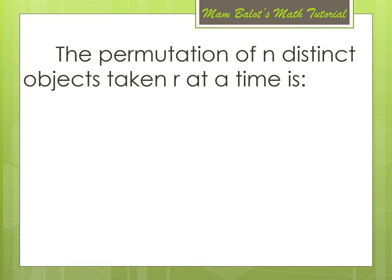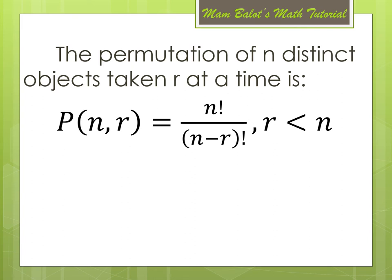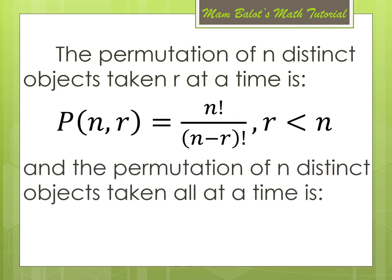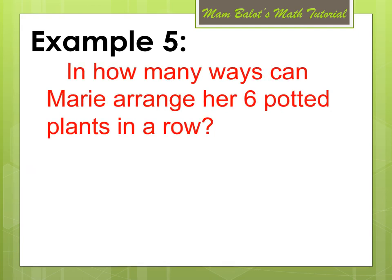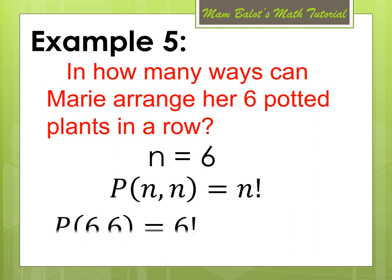Observe that the permutation of N distinct objects taken R at a time is solved using N factorial over (N minus R) factorial, when R is less than N. And the permutation of N distinct objects taken all at a time is simply equal to N factorial. For example, in how many ways can Marie arrange her 6 potted plants in a row? N is equal to 6 and all of them are arranged, so we use P(6,6) = 6 factorial = 720.